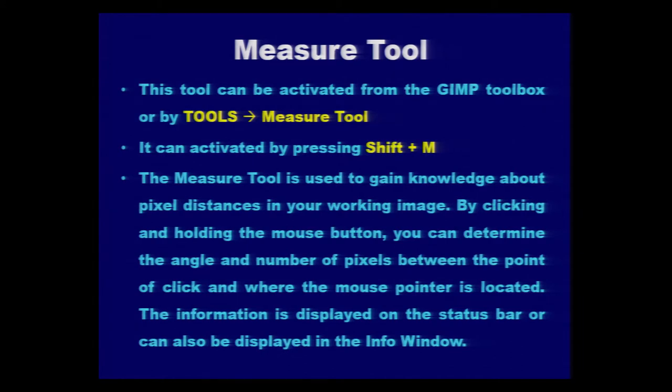The measure tool is used to gain knowledge about pixel distances in the GIMP working area. By clicking and holding the mouse button, you can determine the angle and the number of pixels between the initial click point and where the mouse pointer is currently located. You can click somewhere, drag to the area you want to measure, and the information — distance, angle, width, and height — will appear in the status bar or in the information window.